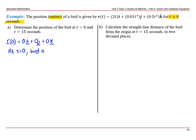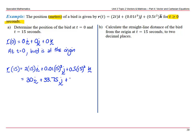Now look at when t is 15, we'd have two lots of 15i plus 0.01 times 15 cubed j plus 0.5 times 15 squared k, which gives us 30i plus 33.75j plus 112.5k.